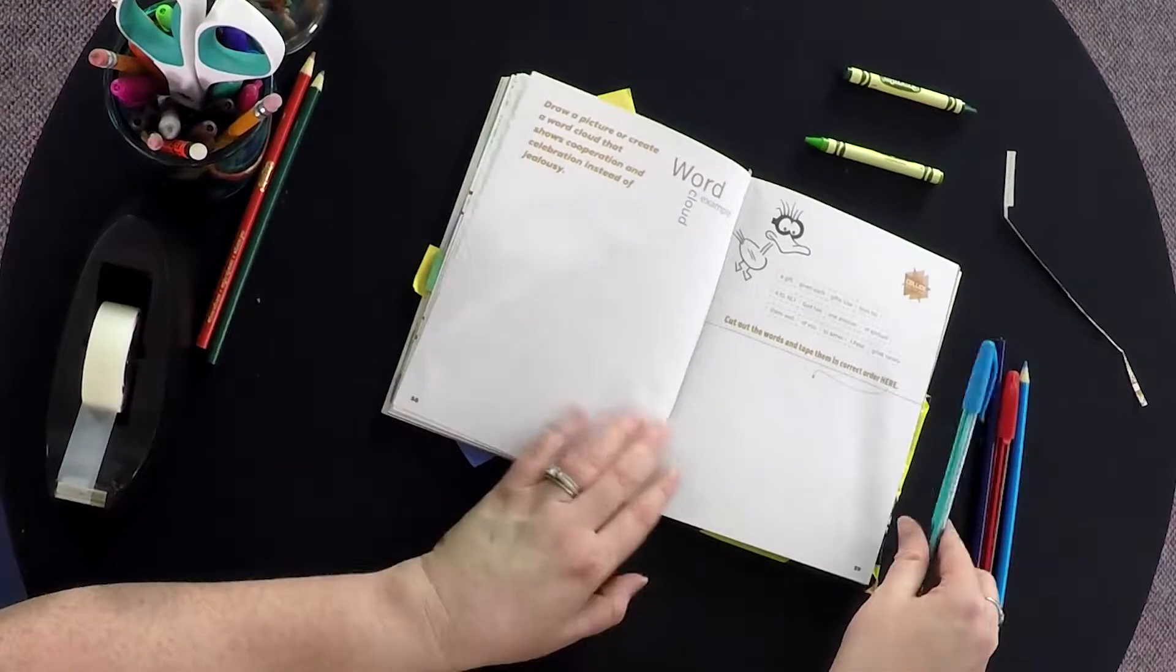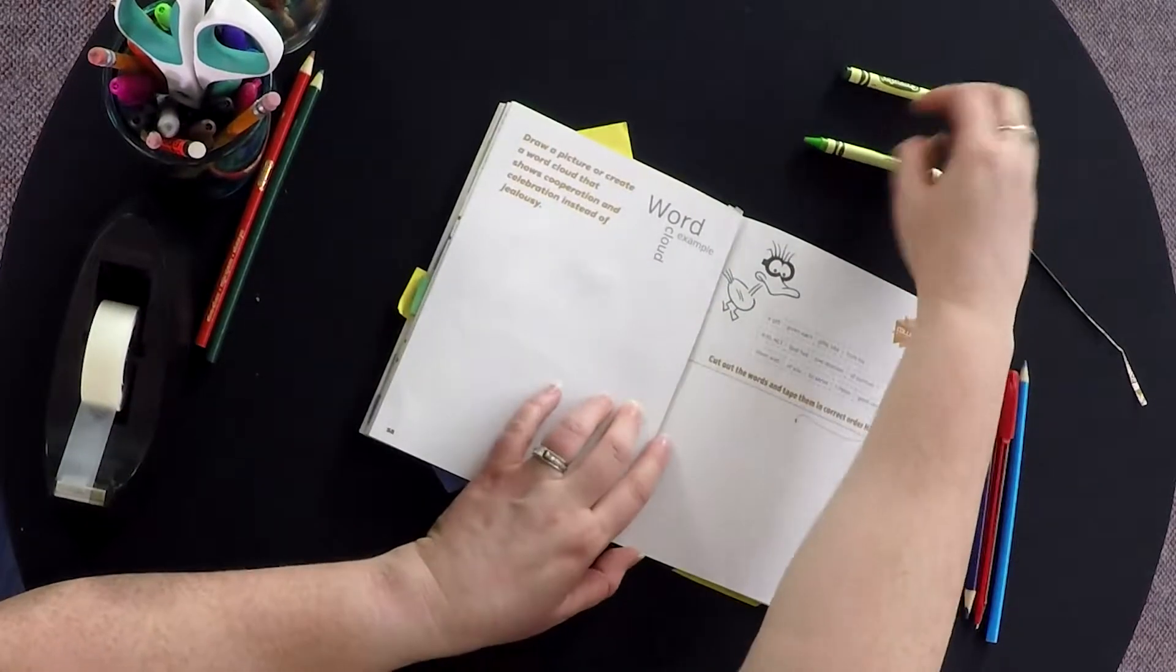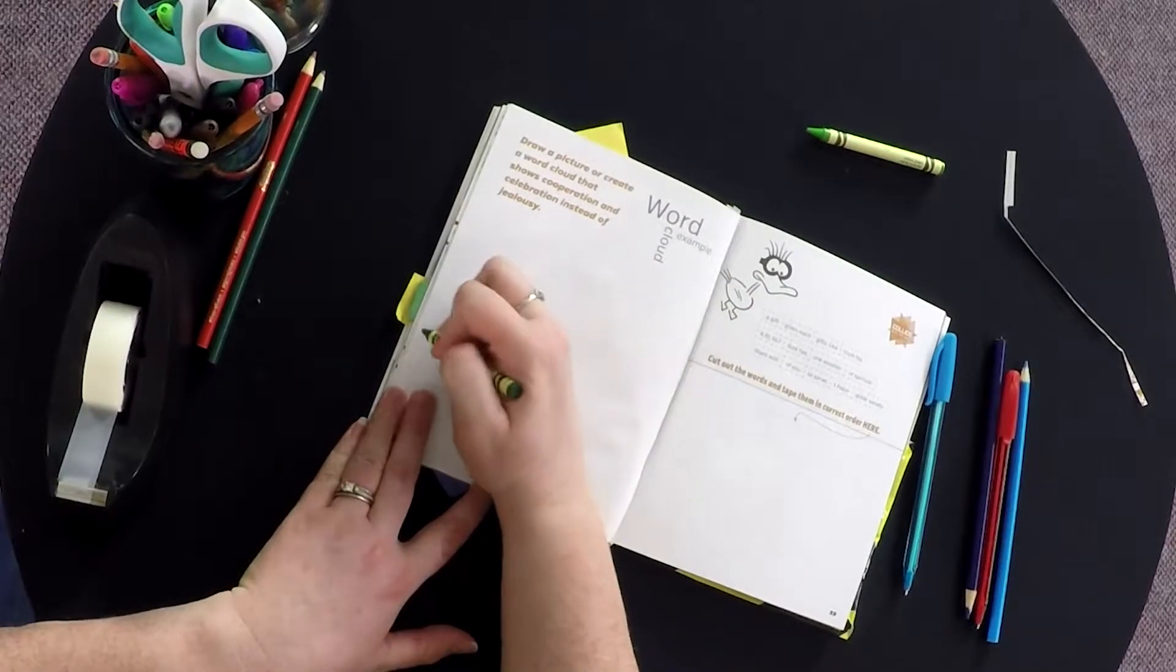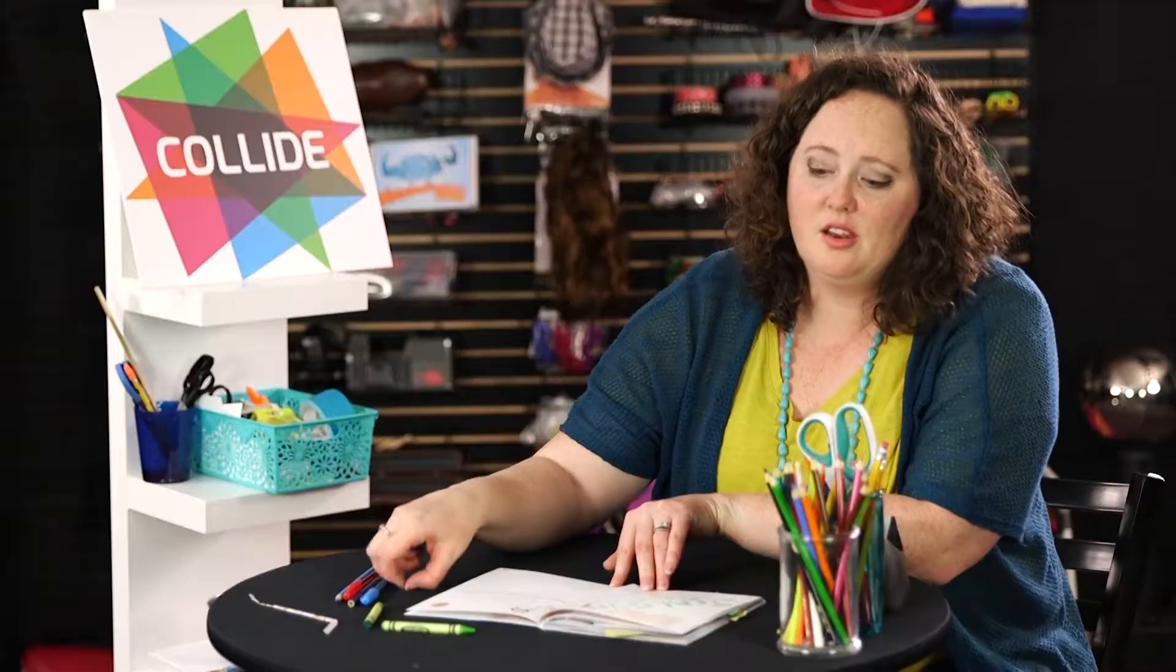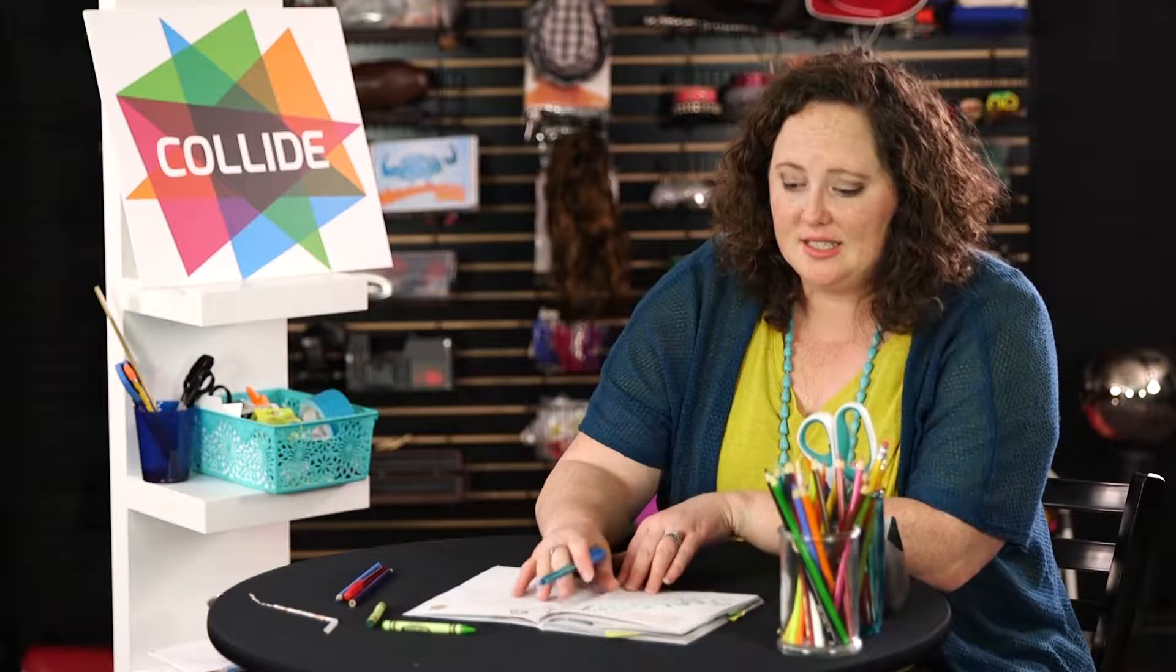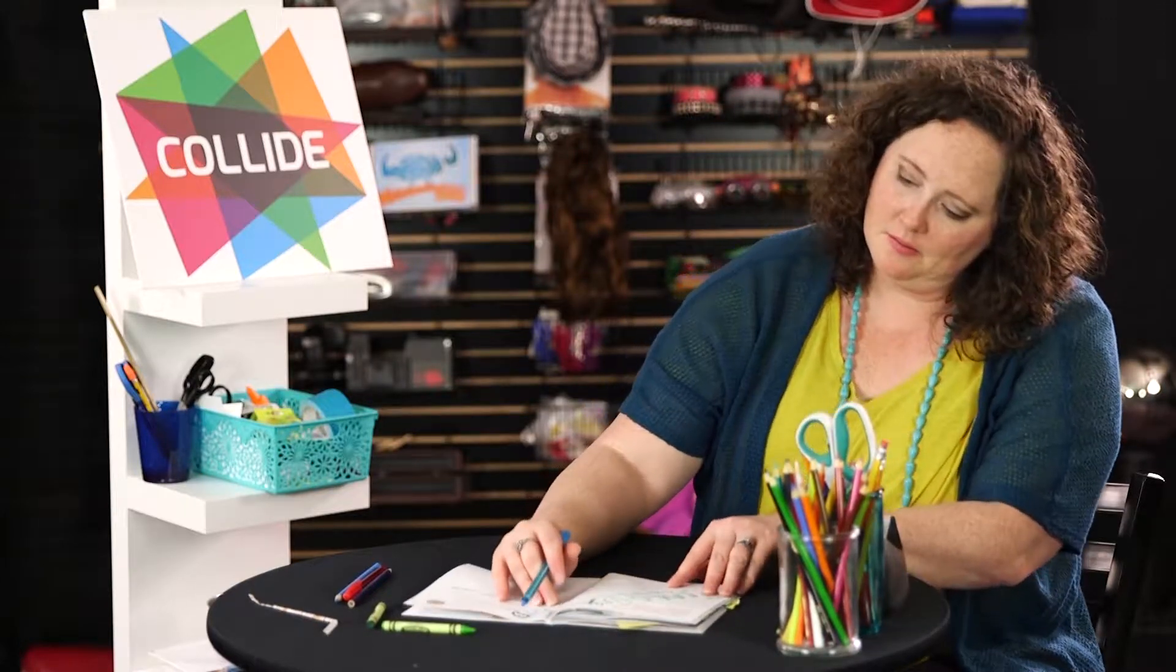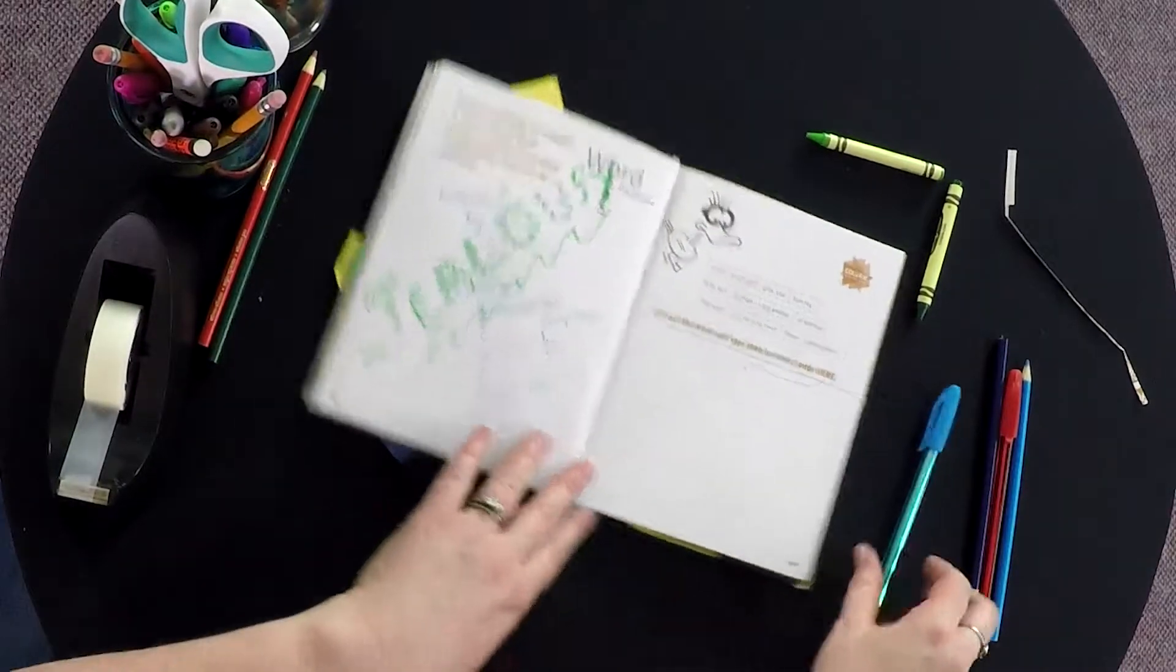The next activity is on page 58. On this page, they're going to write the word 'jealousy' with a green crayon. Then they're going to draw a picture or create a word cloud that shows cooperation and celebration instead of jealousy.